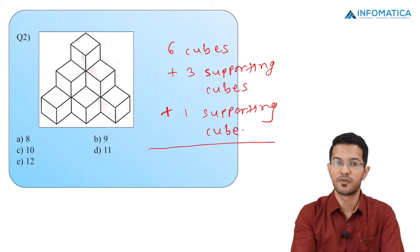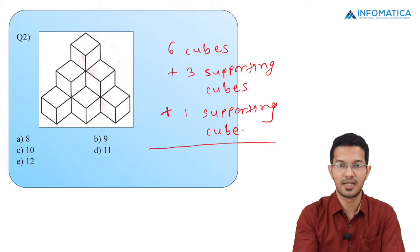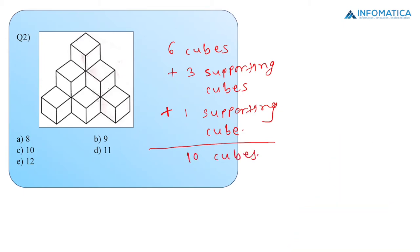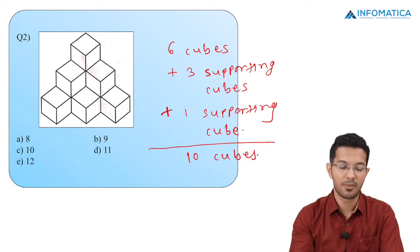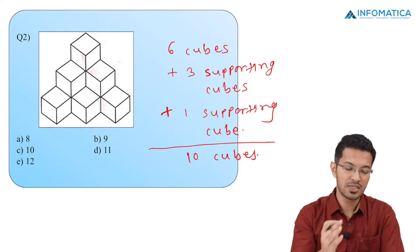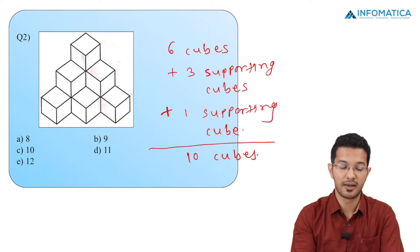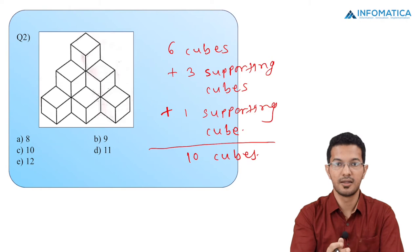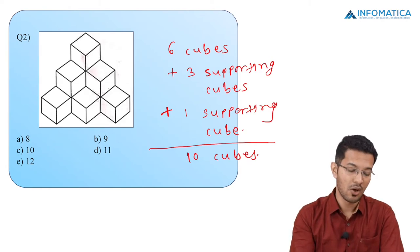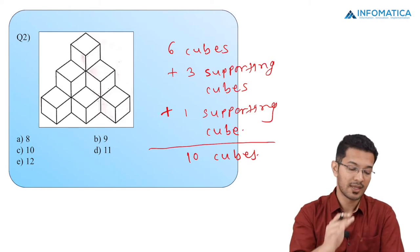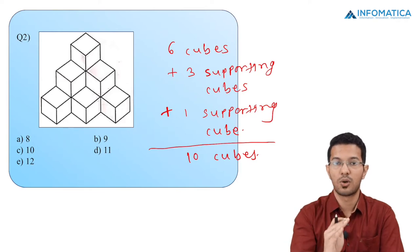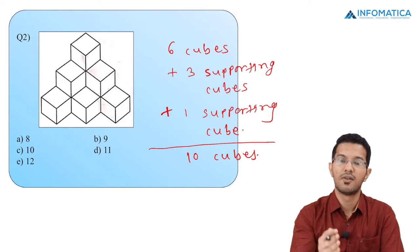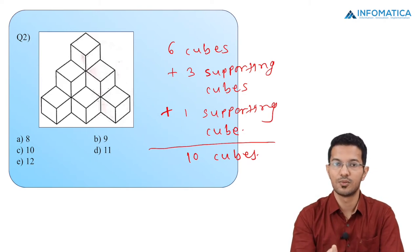So if I add the total number of cubes I get 6 plus 3 plus 1. A quick recap: I have 6 cubes that are visible, then 3 supporting hidden cubes on the bottom floor that cannot be seen, and 1 cube that is between the second floor and top floor which is also not visible. So 6 plus 3 plus 1 gives the answer as 10 cubes.